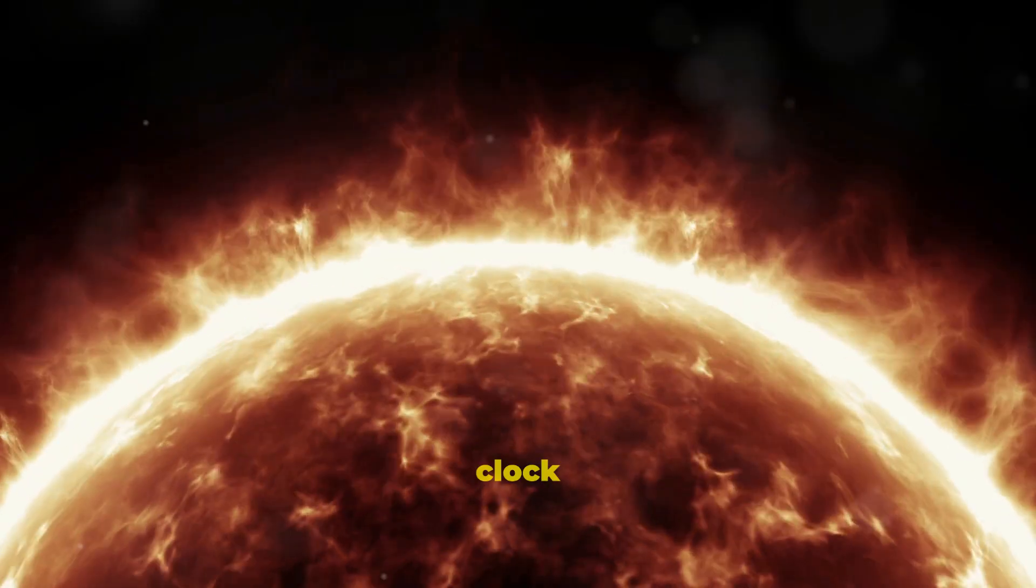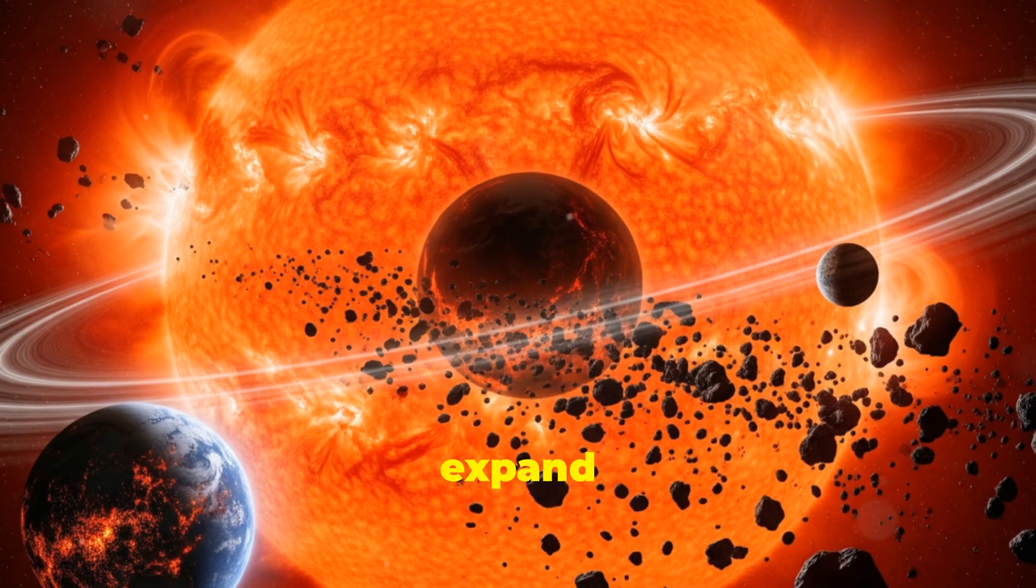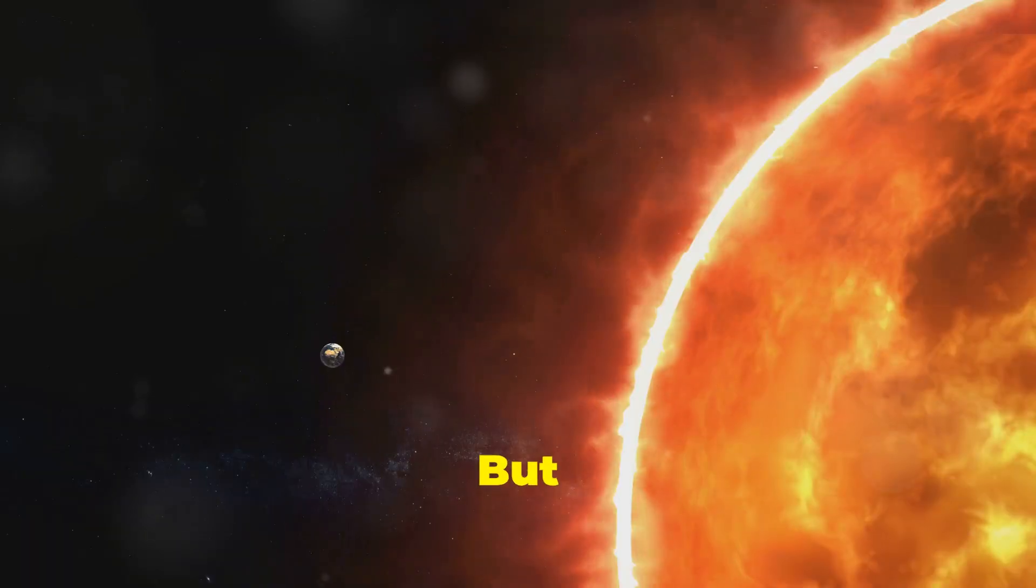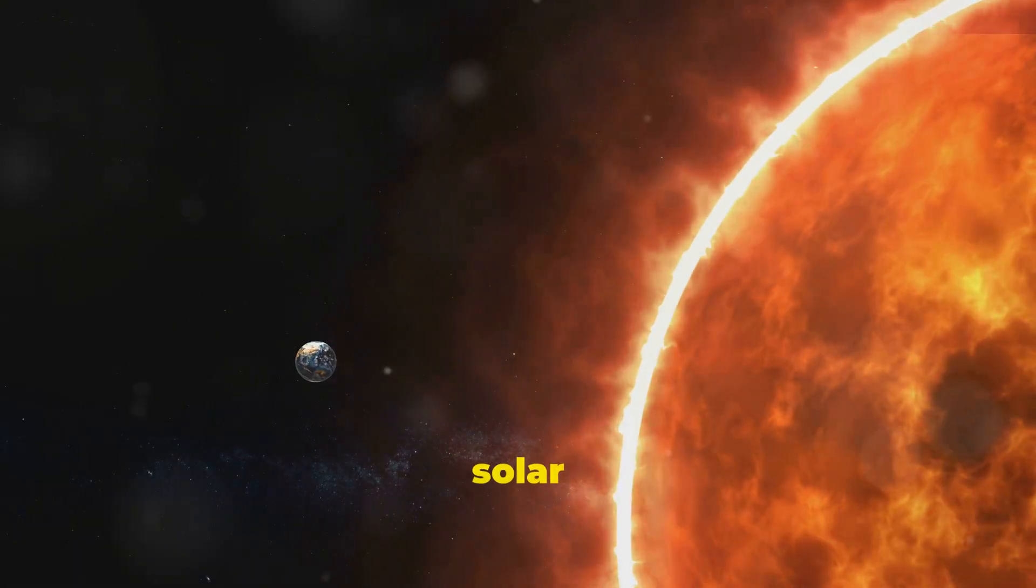But like all stars, the Sun has a clock ticking. In about 5 billion years, it will run out of fuel, expand into a red giant, and eventually die. But until then, it's the life-giver, the guardian, and the blazing heart of our solar system.